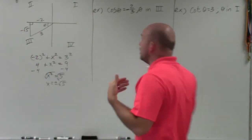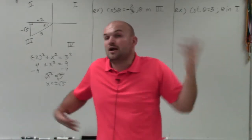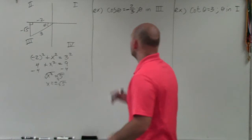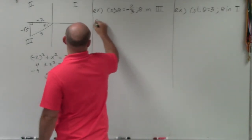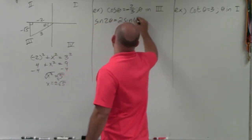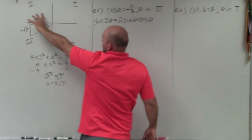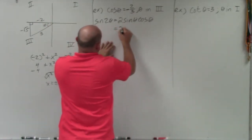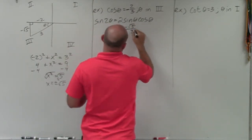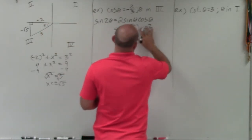Now we know all the sides of our triangle, so we can evaluate the double angles. First, let's do sine of 2 theta. The formula is 2 sine theta cosine theta. Looking at our right triangle: sine is opposite over hypotenuse, which is negative square root of 5 over 3. Cosine is adjacent over hypotenuse, which is negative 2 over 3.